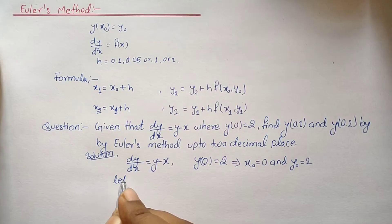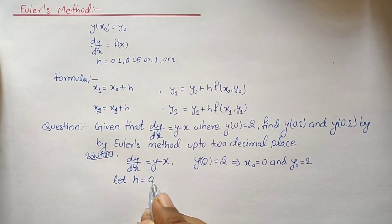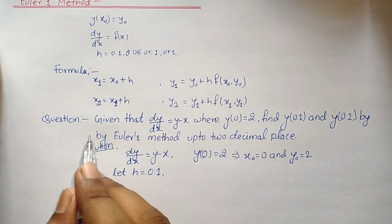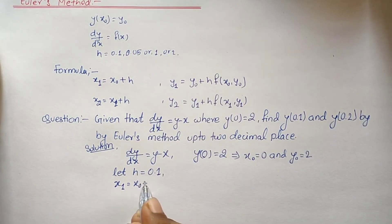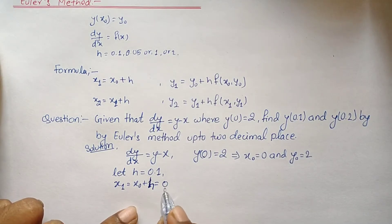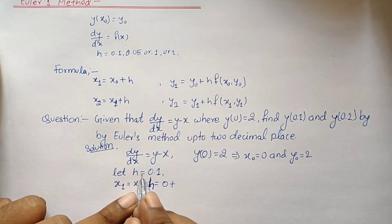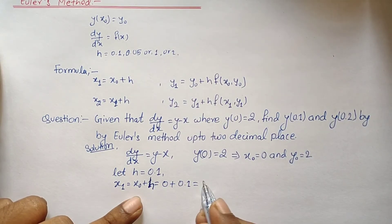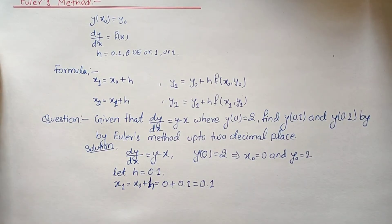Let h equal 0.1. Using the formula, x₁ equals x₀ plus h, so x₁ equals 0 plus 0.1, which gives x₁ equals 0.1.